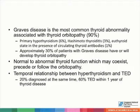Graves disease is the most common thyroid abnormality associated with thyroid orbitopathy. Approximately 30% of patients with Graves disease have or will develop thyroid orbitopathy. However, normal to abnormal thyroid function may coexist, precede, or follow the orbitopathy, and there is a temporal relationship between hypothyroidism and thyroid eye disease.